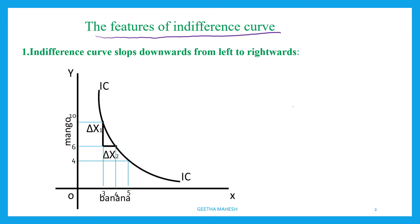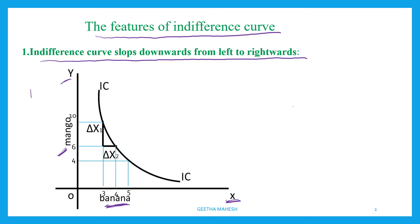The first feature is that the indifference curve slopes downwards from left to right. You can see in the diagram: on the X-axis, banana is measured; on the Y-axis, mangoes are measured; and the IC curve is moving from left to right downwards.